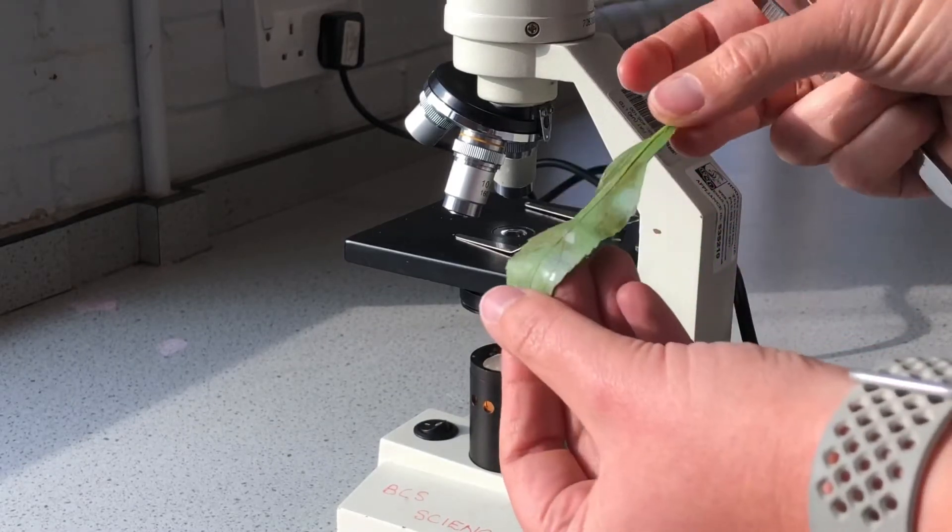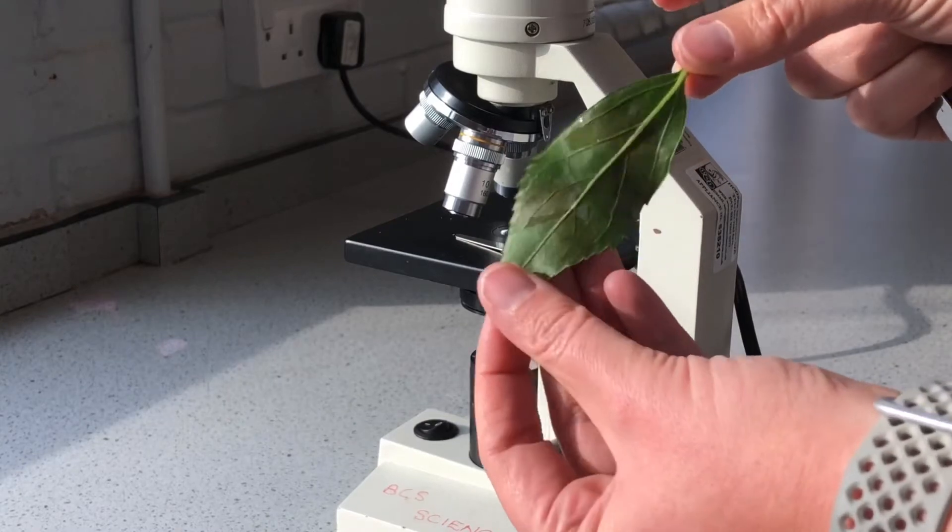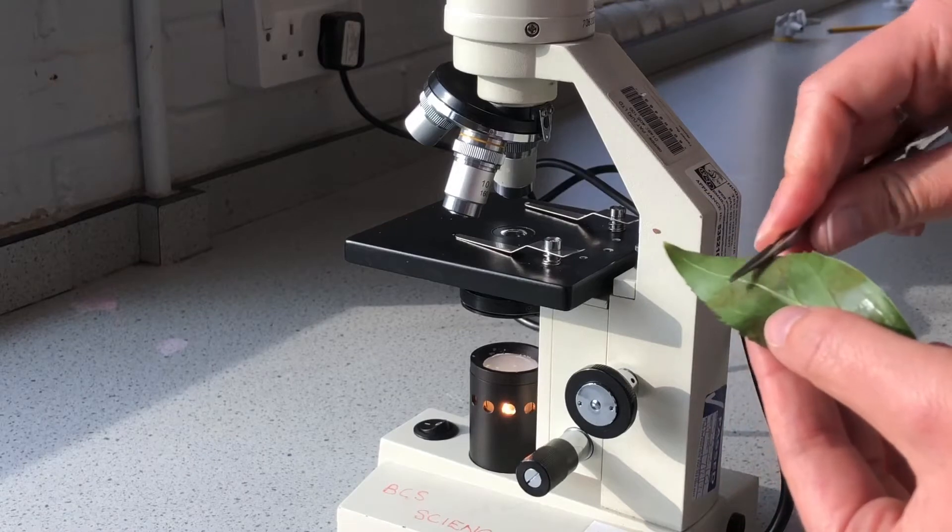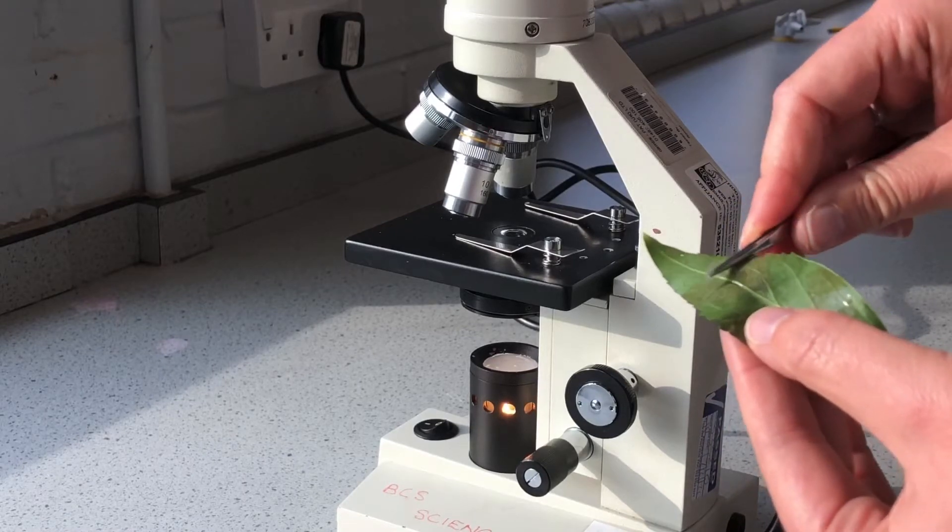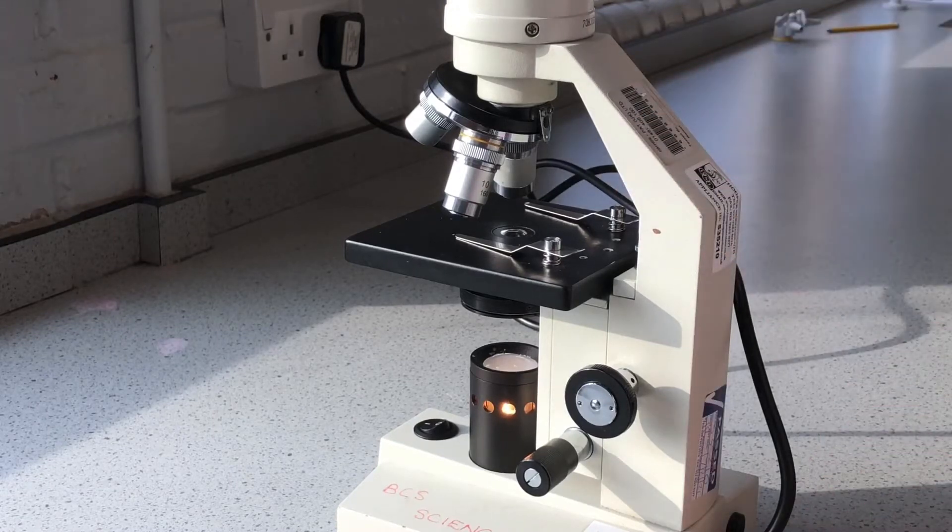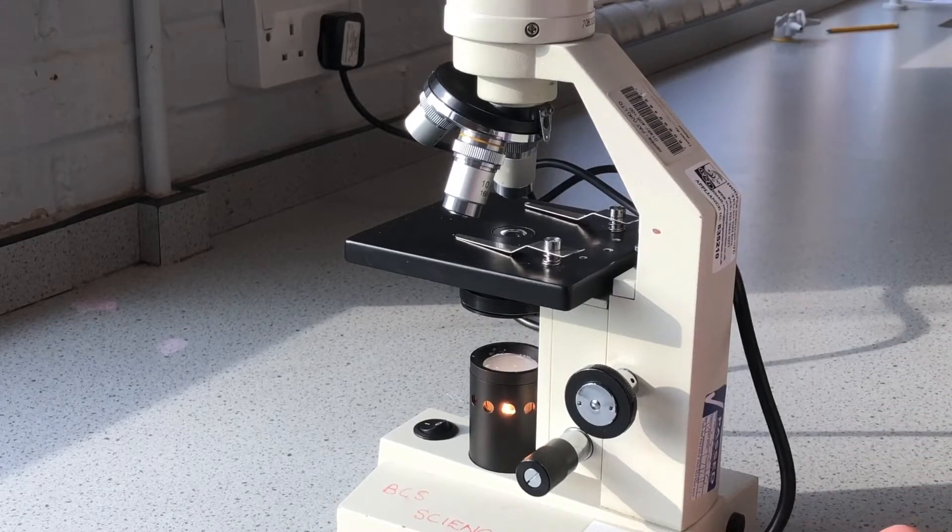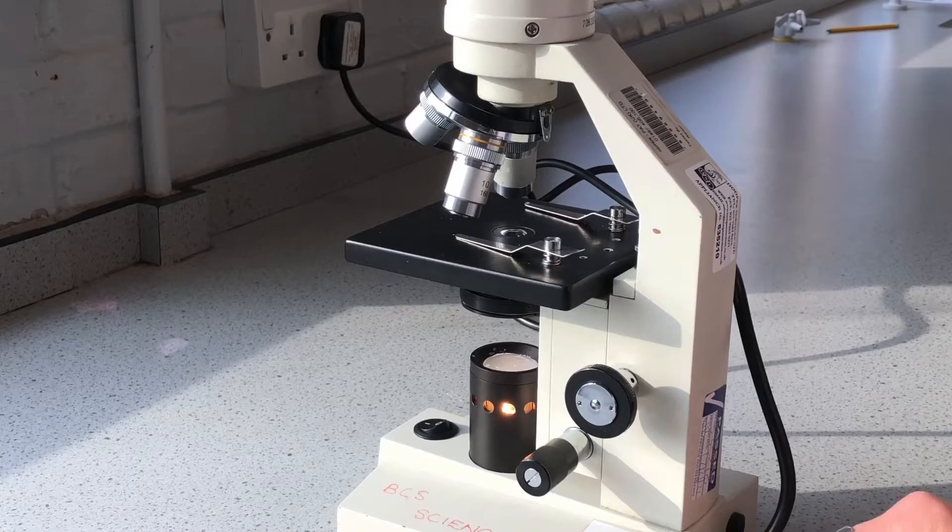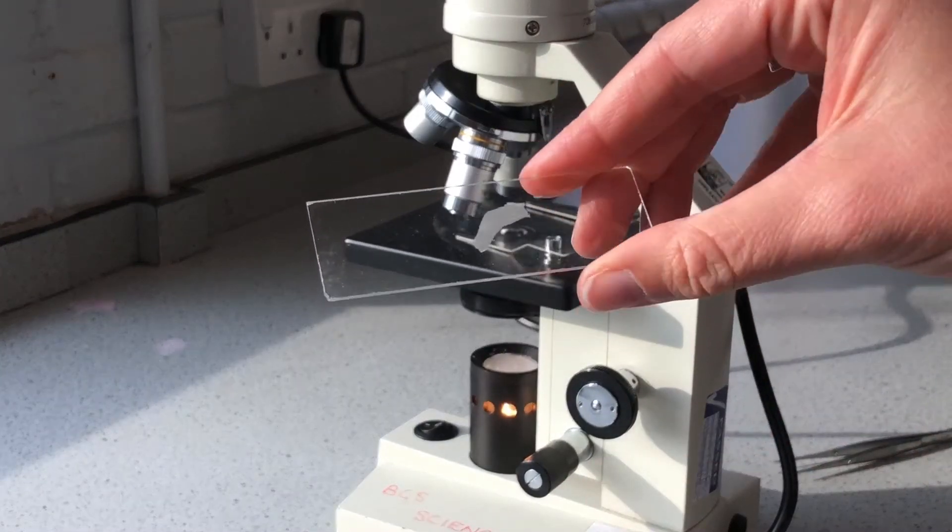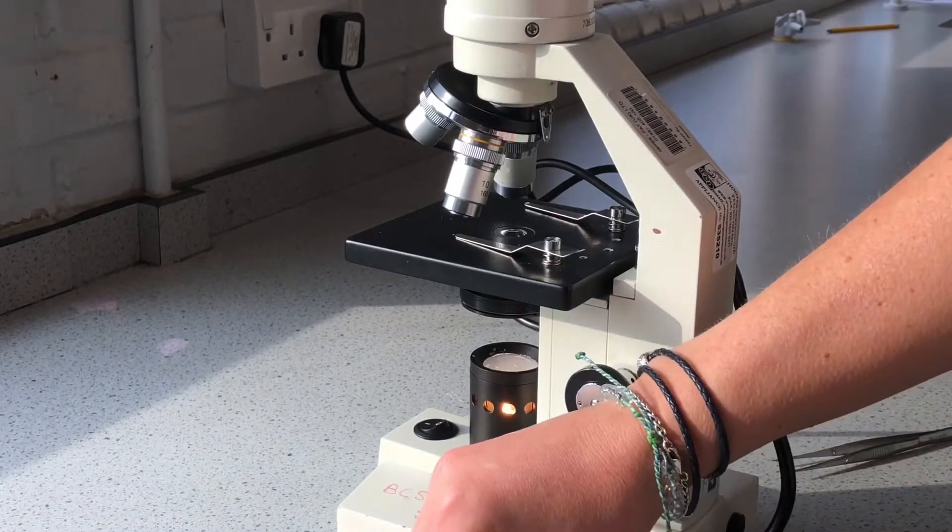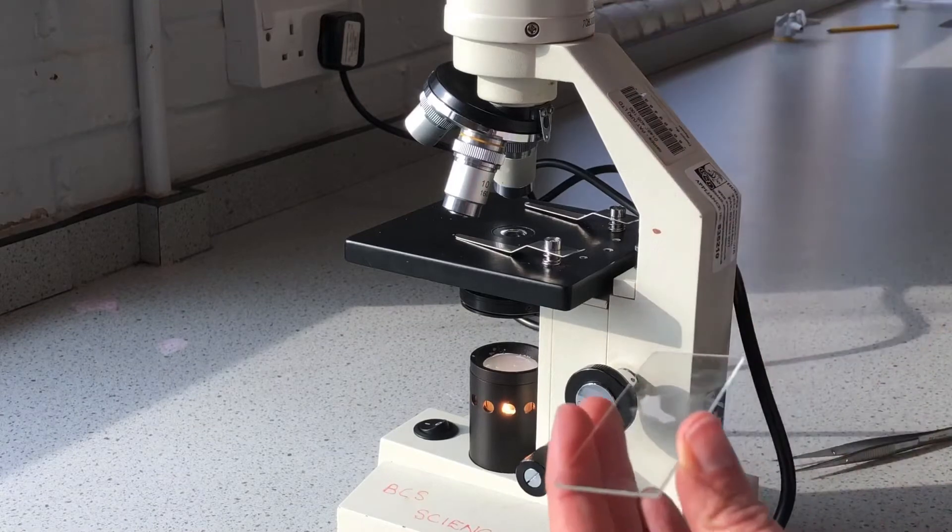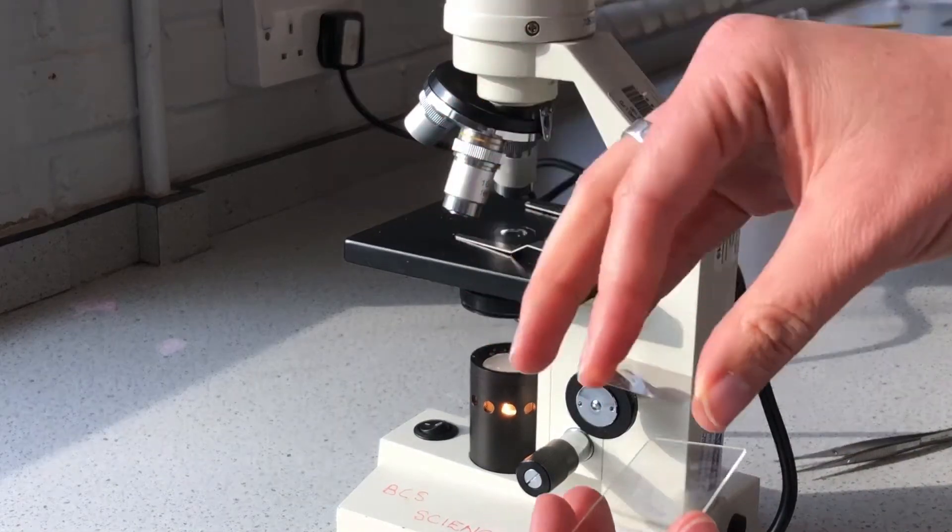You can see on the underside of this leaf we've got some nail varnish painted on there. I'm just going to peel back a section of that nail varnish and put that onto my slide. There's no need for any stains; the nail varnish has taken off with it some guard cells. We can use our cover slip to pop over the top and keep it nice and flat.